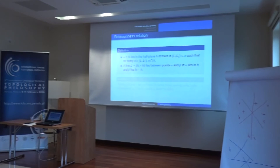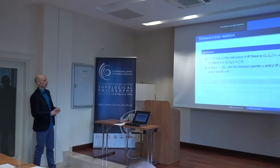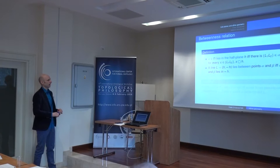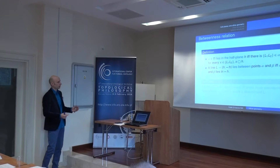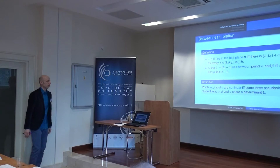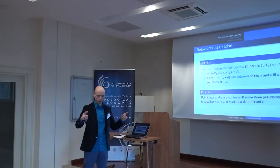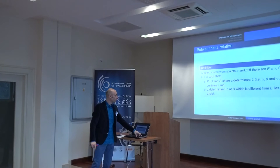We can now say that a line separates points alpha and beta if and only if alpha lies in H and beta lies in the complement of H. We can define collinearity: there is a pseudo-point from alpha and beta respectively, and they share a determinant L. Three points are collinear if you find a determinant going through pseudo-points from all three respective points.